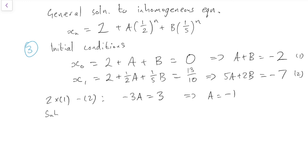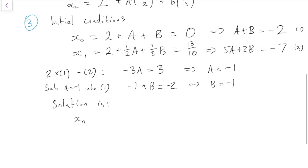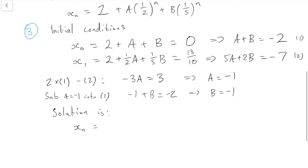And I'll substitute that into the first equation to get -1 + B equals -2, which means B is -1 as well. So the solution at last is xn = 2 + A, which was -1, so I'll just put in a minus there, minus (1/2)^n + B, which is -1 again, so -(1/5)^n. That's the solution.